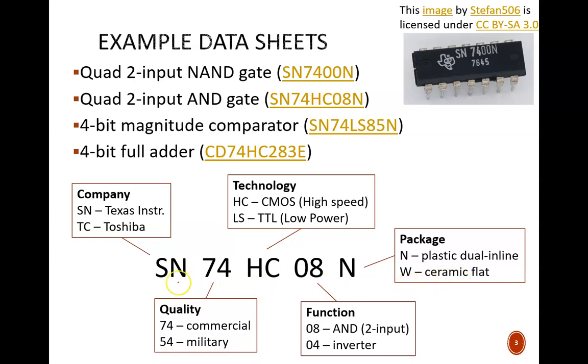Some of the abbreviations in this number seem arbitrary. For example, why does 74 mean commercial grade? But overall, this is a useful naming scheme. Relatively few letters are used to convey a lot of information, as long as you take the time to look up what they mean. And more importantly, the conventions are used across different companies. So you know that if you see an 08 chip, that it represents AND logic, whether it is from Texas Instruments or Toshiba.